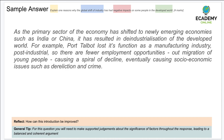Next sample answer: 'As the primary sector of the economy has shifted to newly emerging economies such as India or China, it has resulted in the de-industrialization of the developed world. For example, Talbot lost its function as a manufacturing industry. Post-industrial, there are fewer employment opportunities and migration of young people, causing a spiral of decline and eventually socioeconomic issues such as dereliction and crime.'